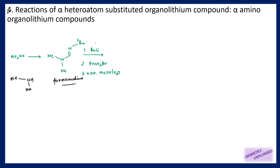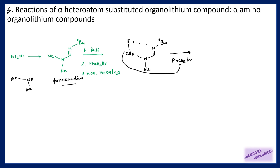So now I can use butyl lithium, which will remove a hydrogen from this alpha position, forming CH2 minus, and on this CH2 minus I can attach lithium. It can form a complex with the nitrogen. Next step: I am using an electrophile here, so it will attack on this carbon and Br will be removed, giving me this product.